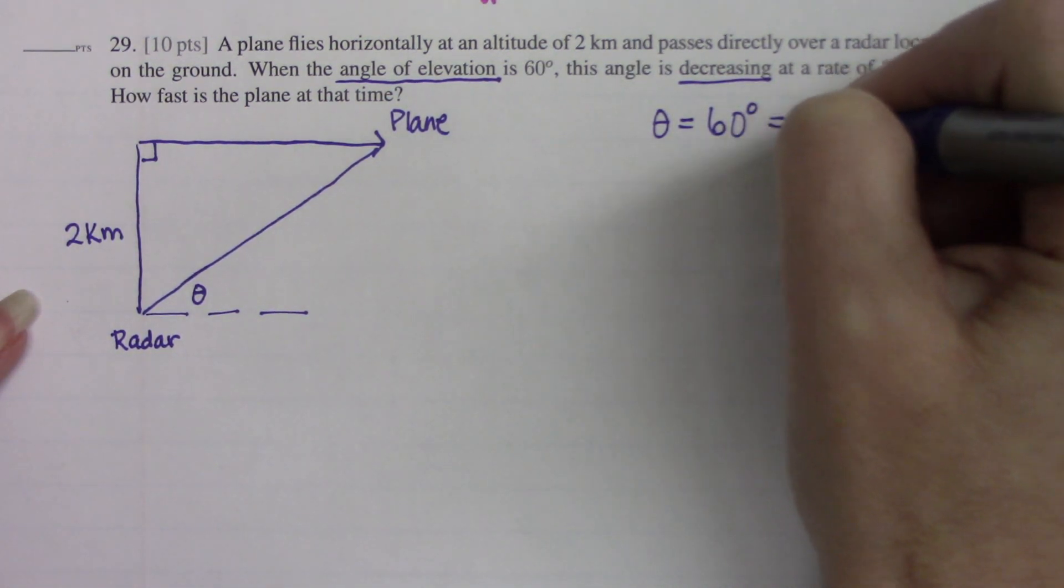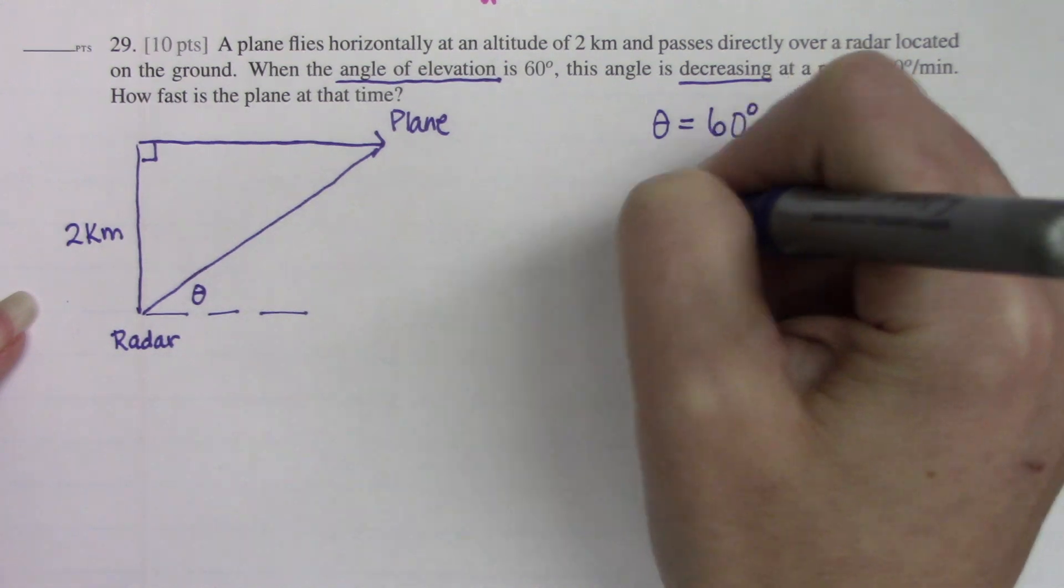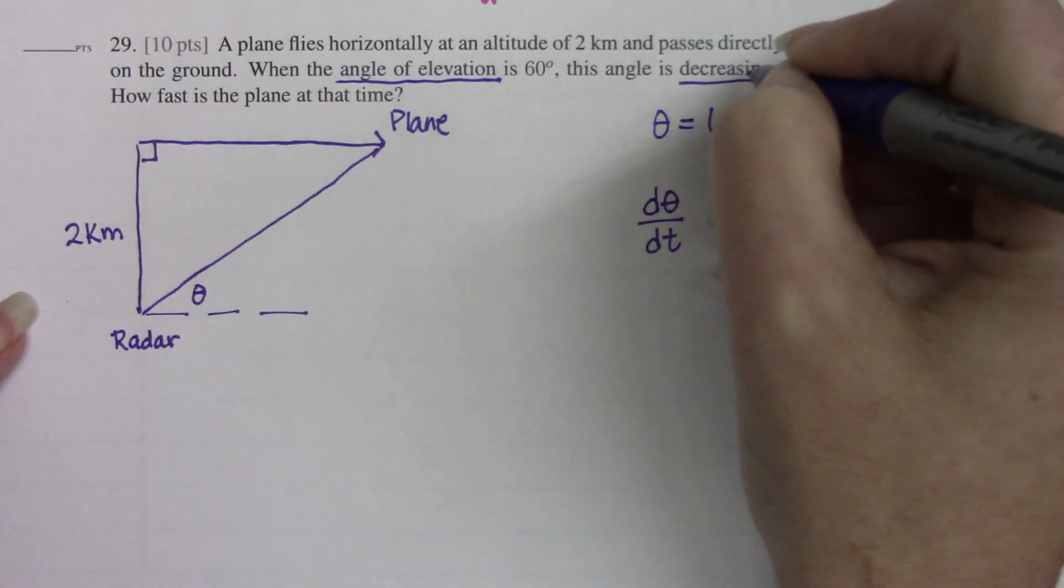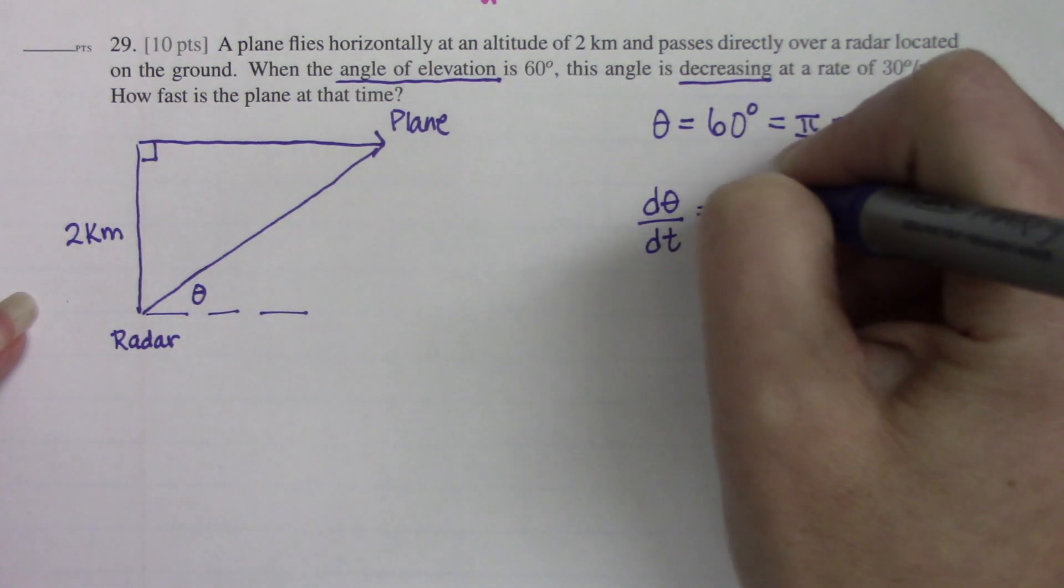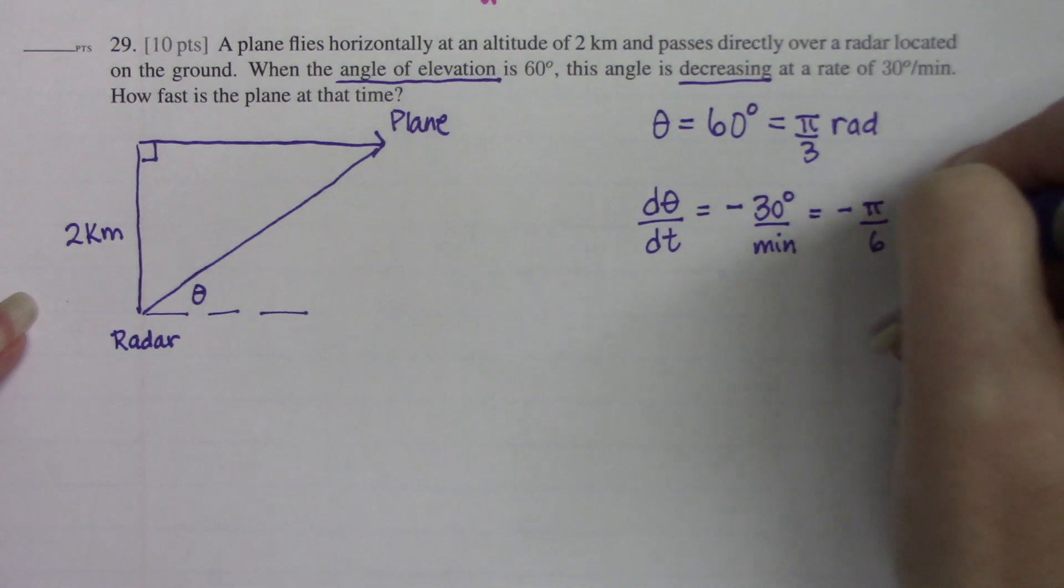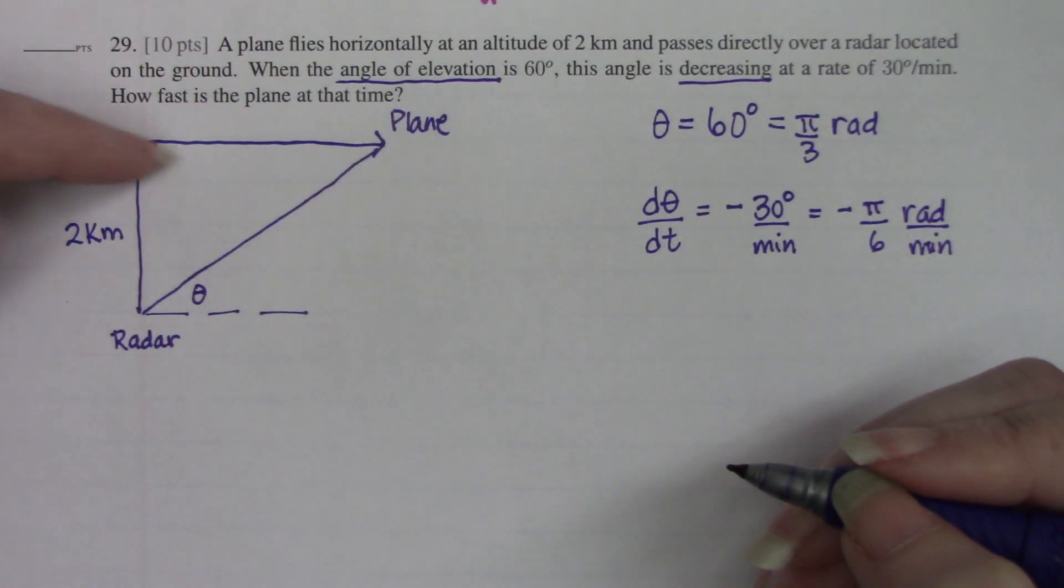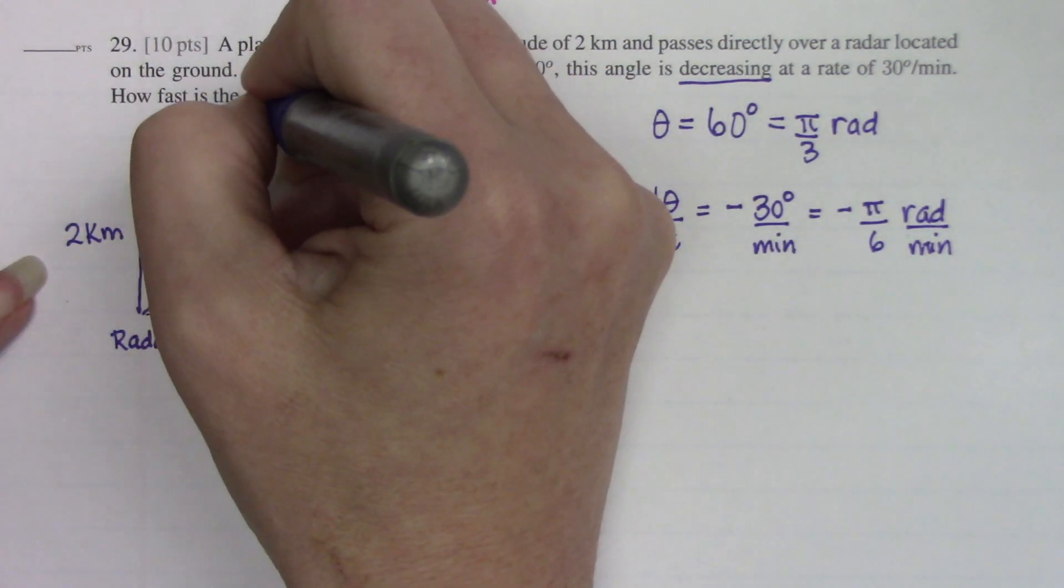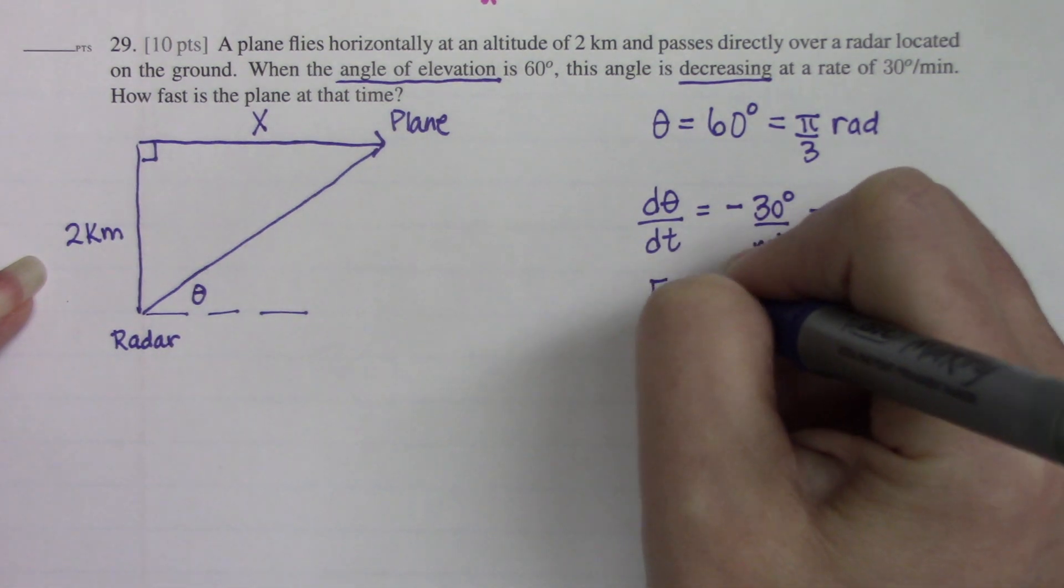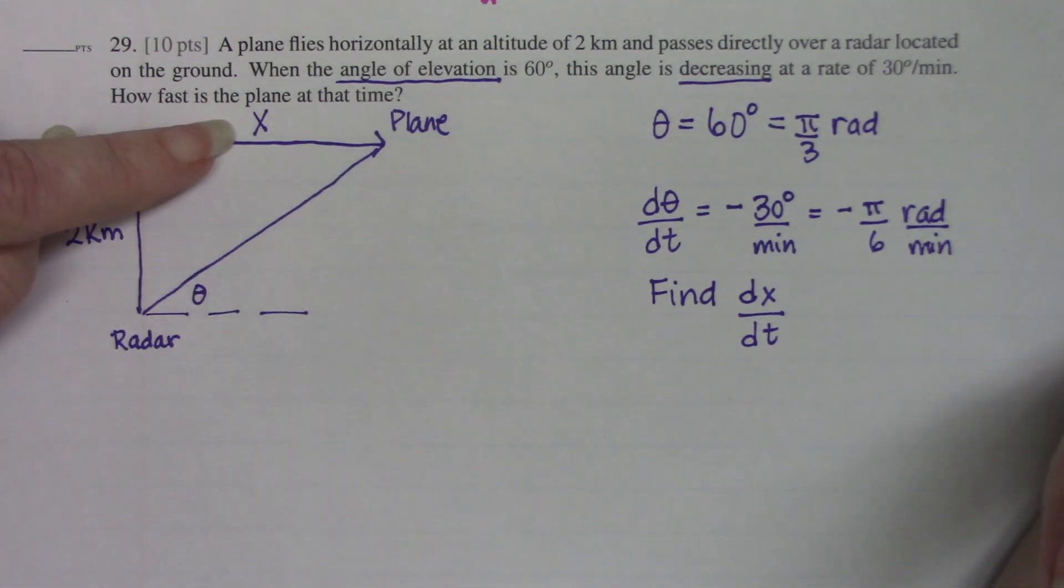We're going to put that in radians because all angles need to be in radians. Then we're told the angle is changing, so this is a related rate. D theta dt is decreasing, so it's negative 30 degrees per minute. Let's translate this into radians, so this is negative pi over 6 radians per minute. They want us to find the speed of the plane, so I'm going to call this distance x. The goal of the problem is to find dx dt.